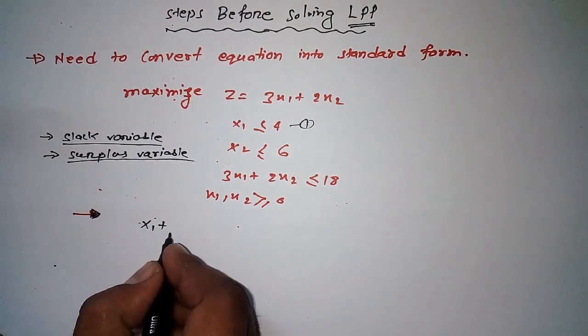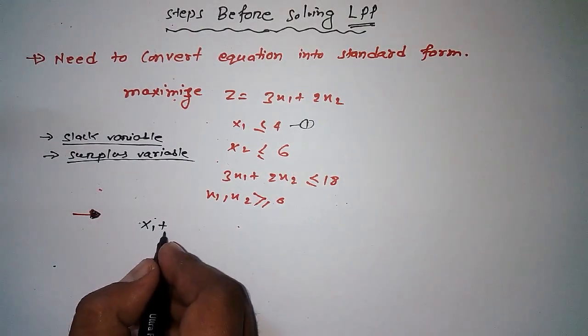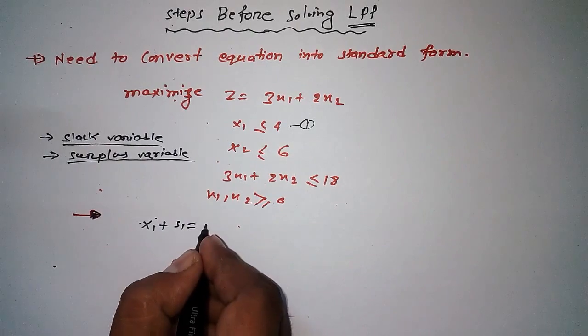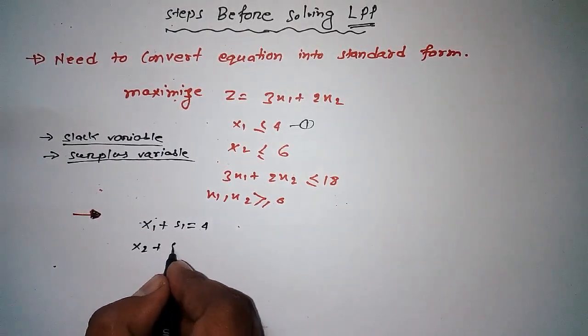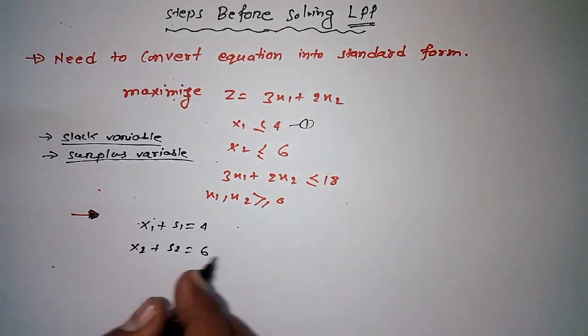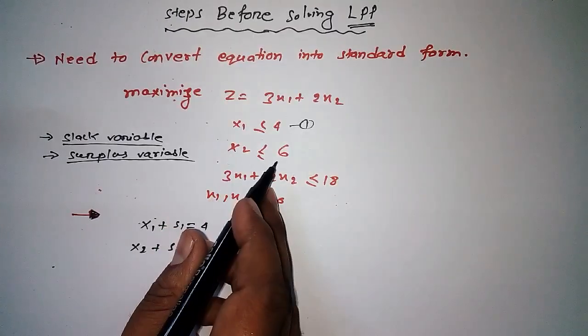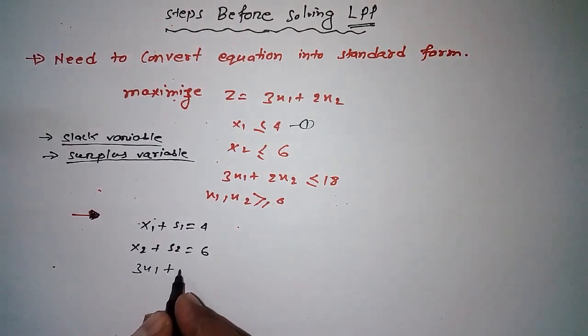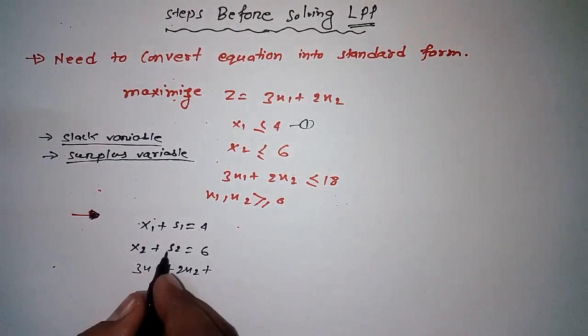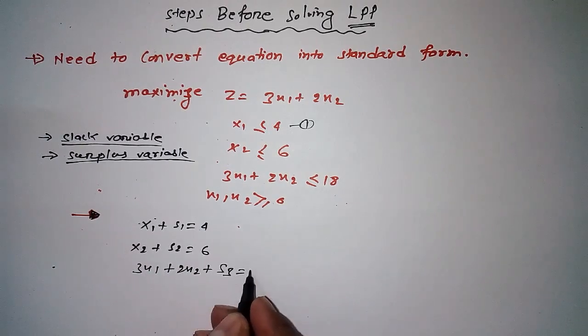Now X1 plus S1 is equal to 4. Now here X2 plus S2, the same, is equal to 6 because we need to add something here to make it equivalent. Now here what we got: 3X1 plus 2X2 plus S3, well this is the equation